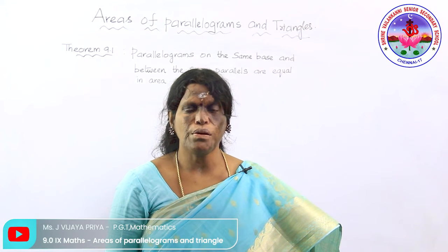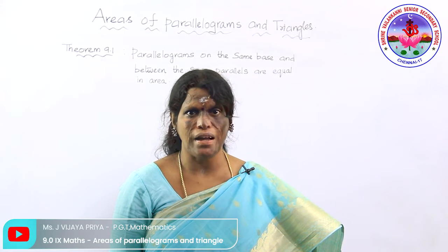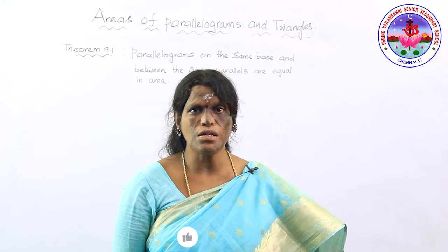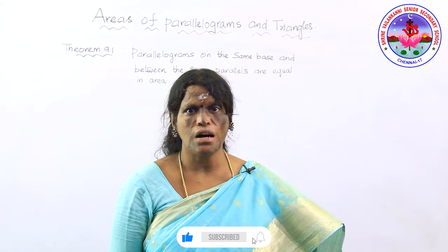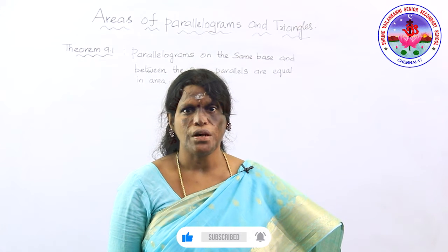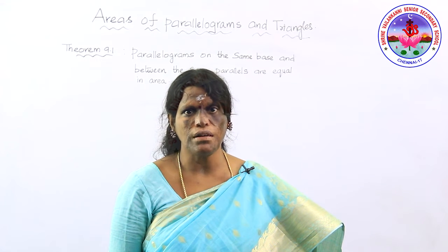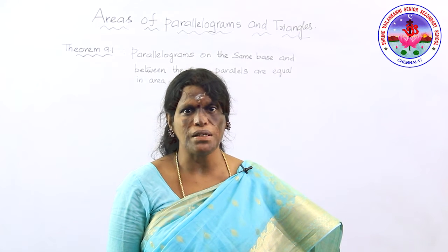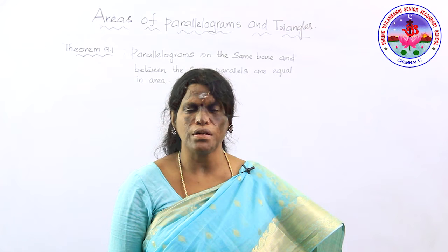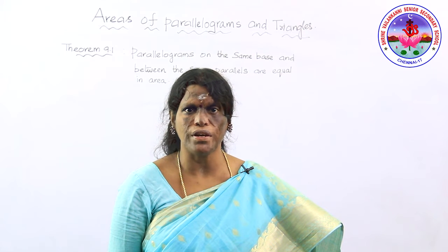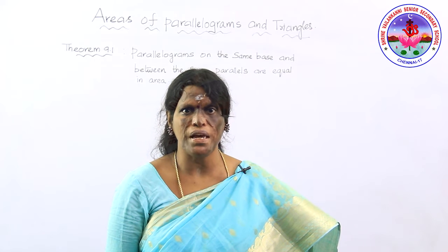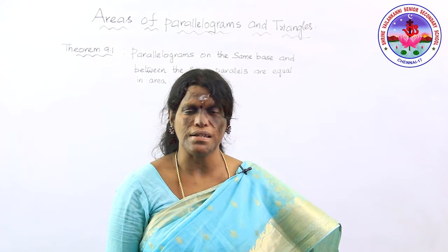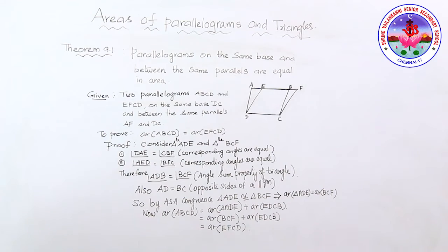Hello students. You will be knowing about the congruence of triangles — when two triangles are congruent, their corresponding sides and angles are equal. So if the triangles are congruent, their areas must also be equal. In this chapter, we are going to talk about the areas of geometrical figures under the condition that they lie on the same base and between the same parallels.